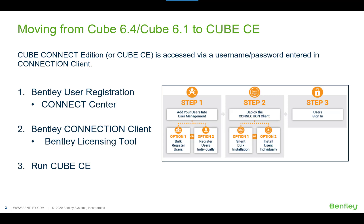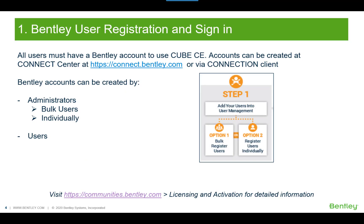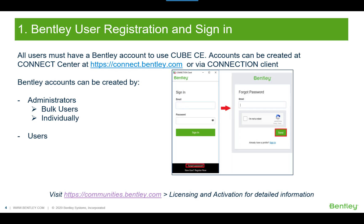To register, you can go to Bentley's Connect Center at connect.bentley.com or via the Connection Client. Your organization's licenses are managed by your license administrator or anyone with an administrator role. License administrators can add users in bulk via a CSV file, or individually by providing first name, last name, email address, and country. When registered by an administrator, users will receive an email to set their password.